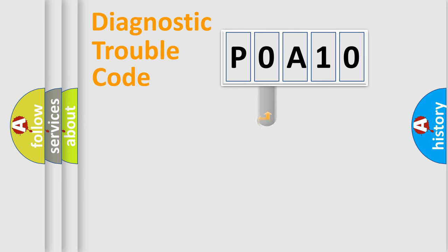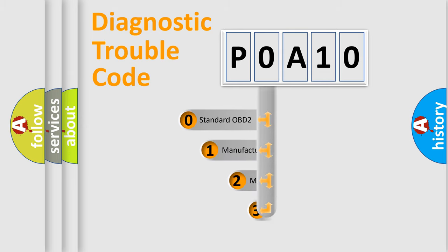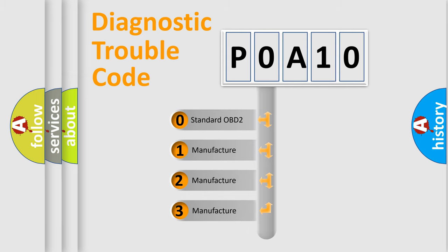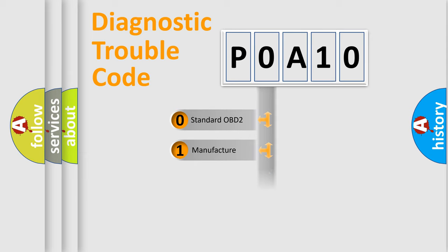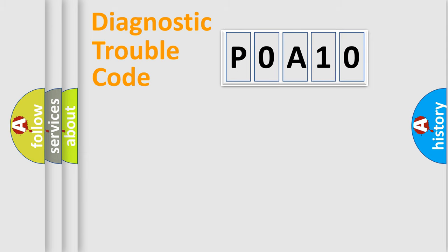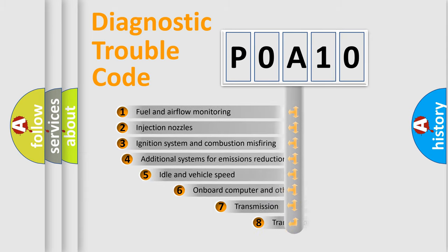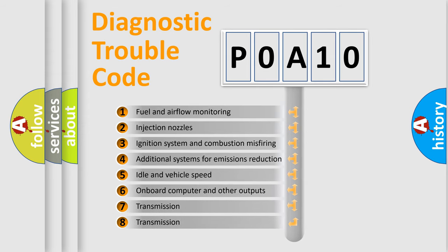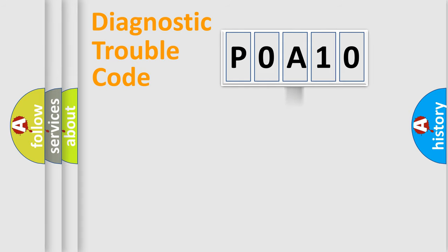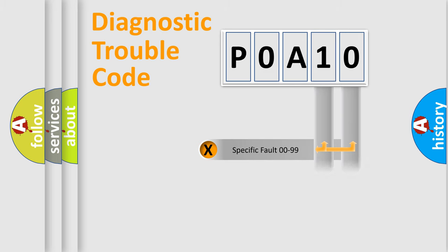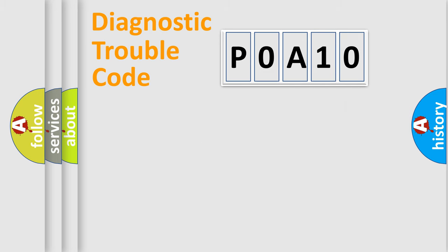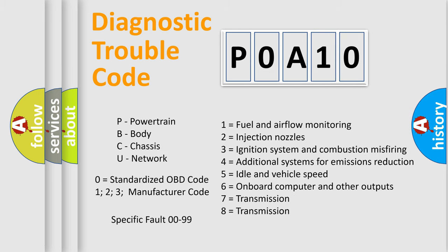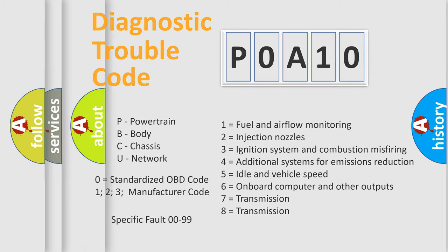This distribution is defined in the first character of the code. If the second character is expressed as zero, it is a standardized error. In the case of numbers 1, 2, or 3, it is a manufacturer-specific error. The third character specifies a subset of errors. This distribution is valid only for the standardized DTC code, and only the last two characters define the specific fault of the group.